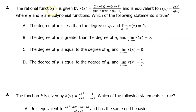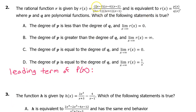Number 2. The rational function r is given by this expression and is equivalent to r of x equals p of x over q of x, where p of x represents the polynomial in the numerator and q of x is the polynomial of the denominator. We can find the leading term of p of x by looking only at the leading term of each factor — that's 2x times x times x, which is 2x to the third power.